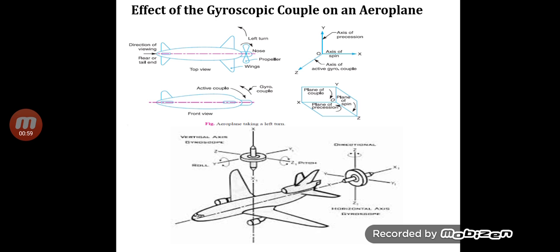Then we are going to see the gyroscopic effect on a ship, and the gyroscopic effect on an automobile — that is four-wheelers as well as two-wheelers — and how that gyroscopic couple is used to maintain the stability of those vehicles, whether aeroplane, ship, automobile, or two-wheeler. Now we are going to see the gyroscopic effect on an aeroplane.